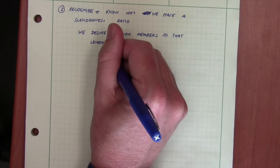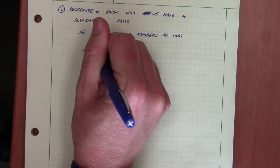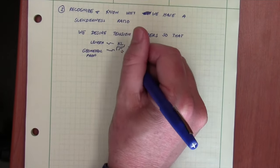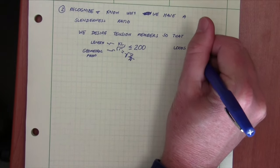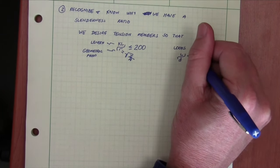KL is a function of the length. R is really square root of I over A, which is really a geometric property and it begins to look a lot like L over D less than 50, which we talked about with wood compression members.